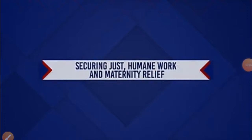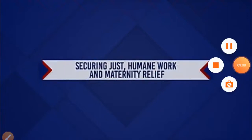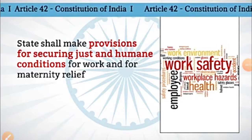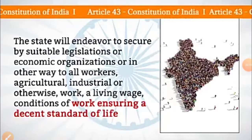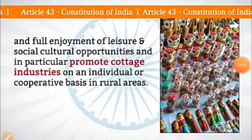The next principle is Securing Just and Humane Work Conditions and Maternity Relief. Under Article 42, the state shall make provisions for securing just and humane conditions for work and for maternity relief. The next principle is Fair Wages and Decent Standard of Life. Article 43 provides that the state will endeavour to secure, by suitable legislation or economic organizations or in other ways, to all workers — agricultural, industrial and otherwise — a living wage and conditions of work ensuring a decent standard of life and full enjoyment of leisure and socio-cultural opportunities, and in particular promote cottage industries in rural areas.